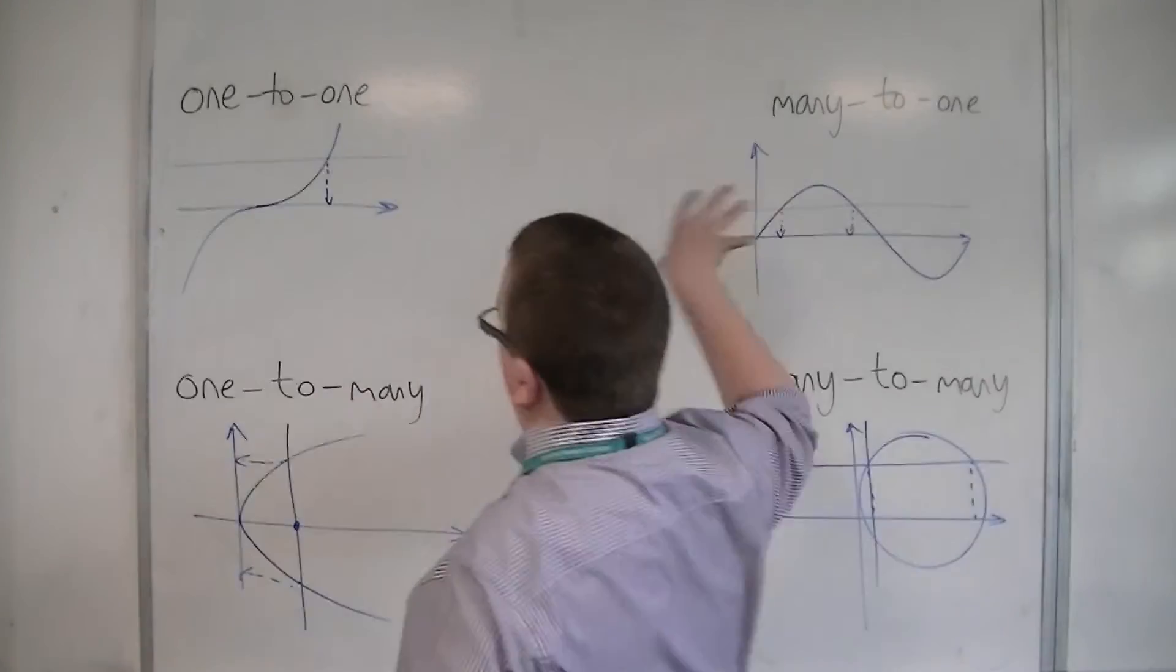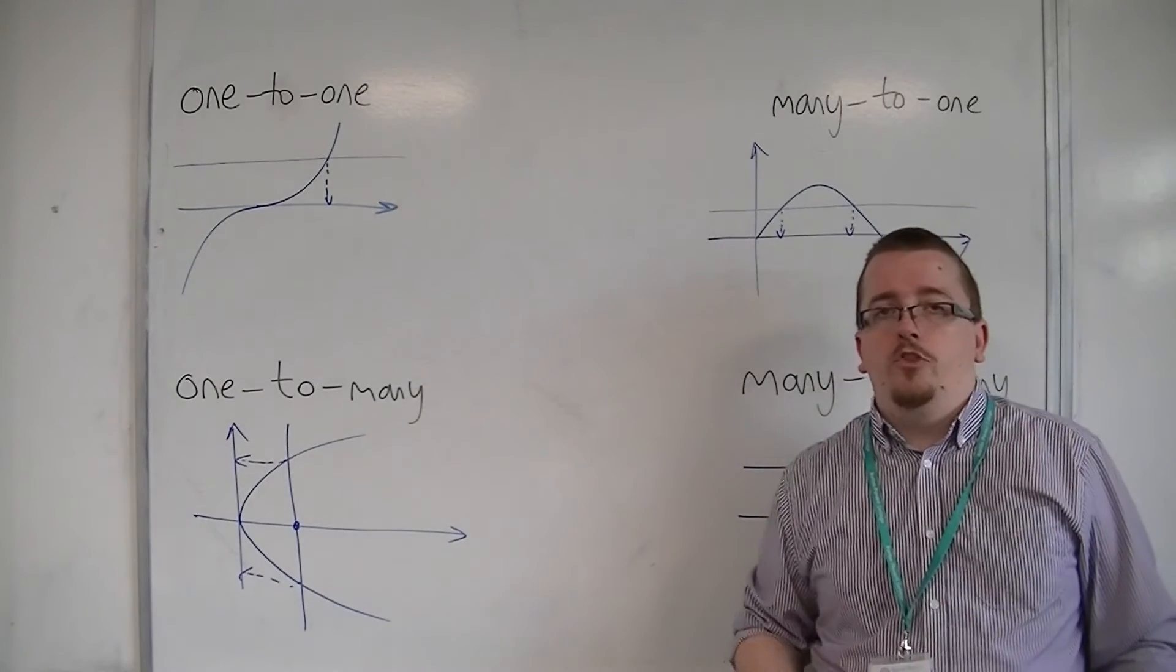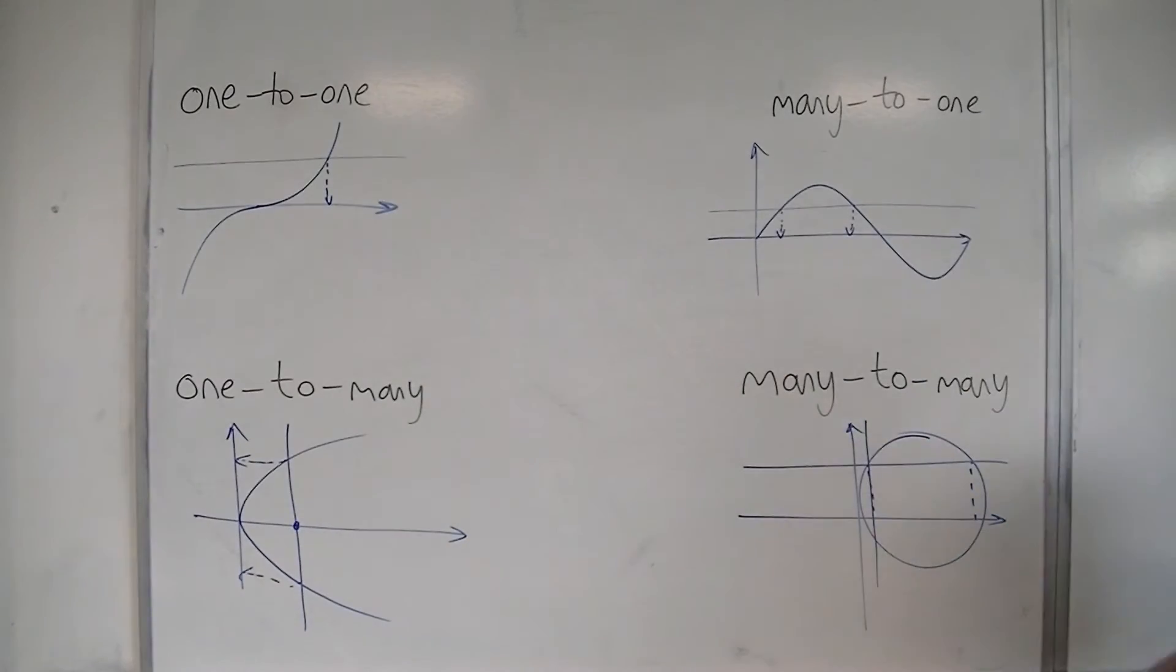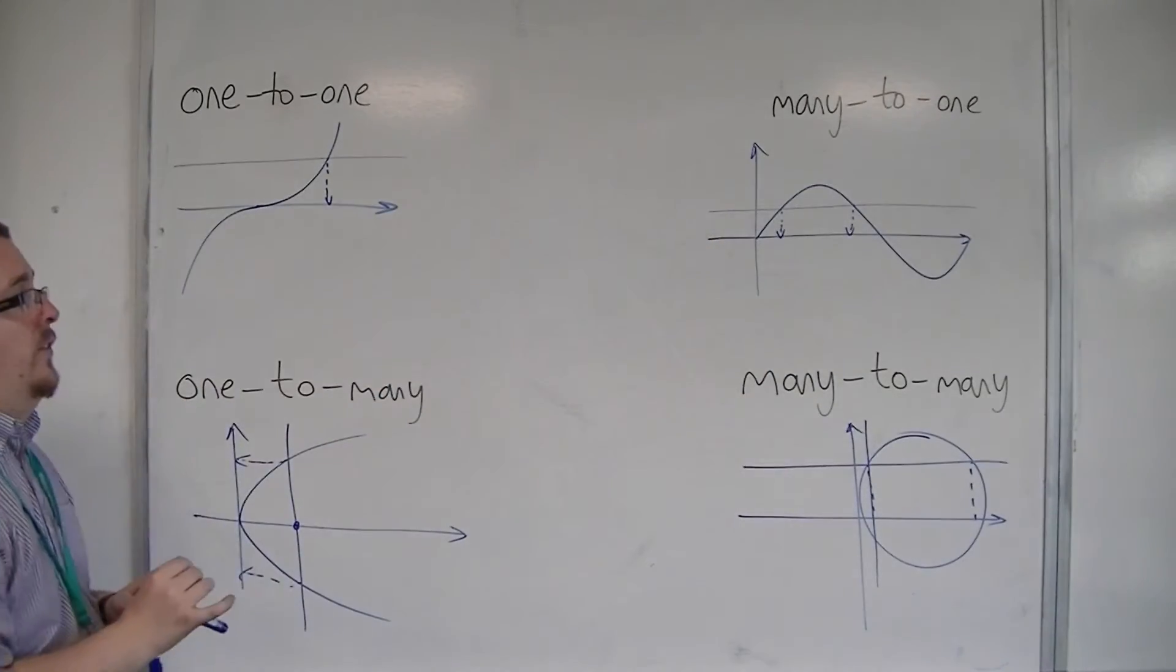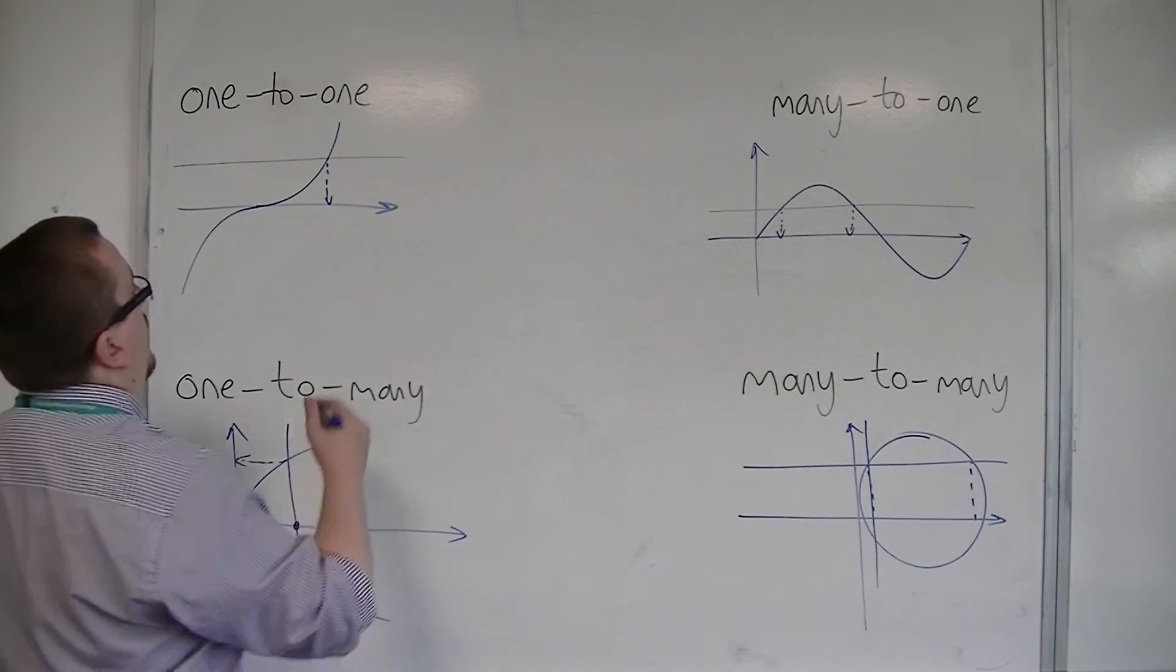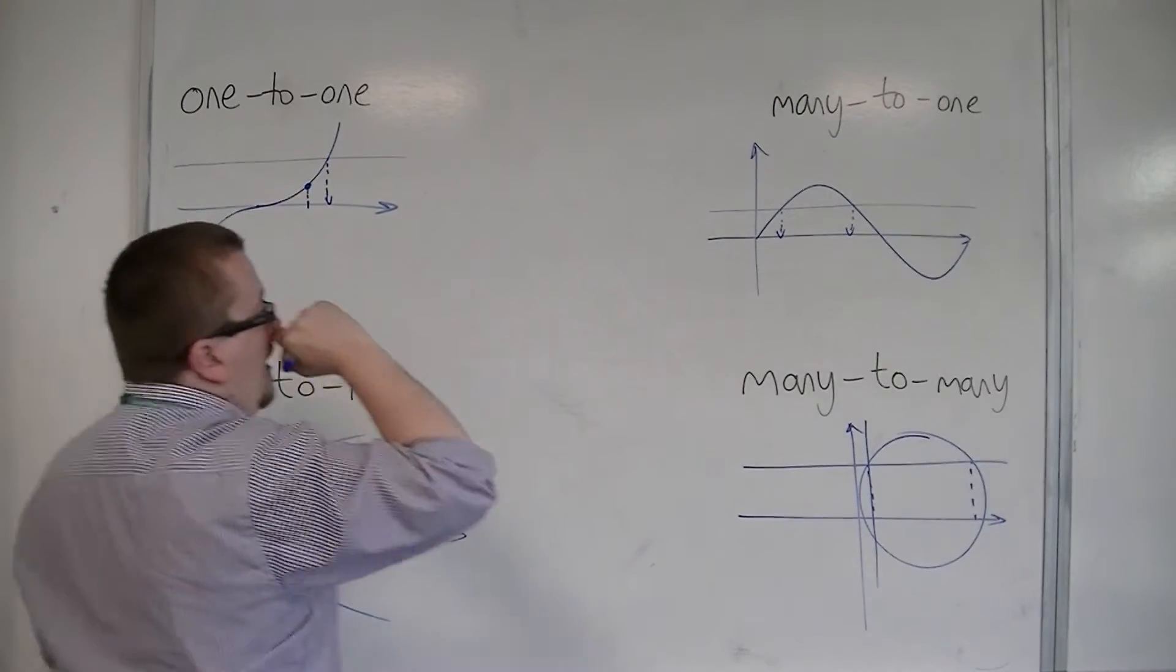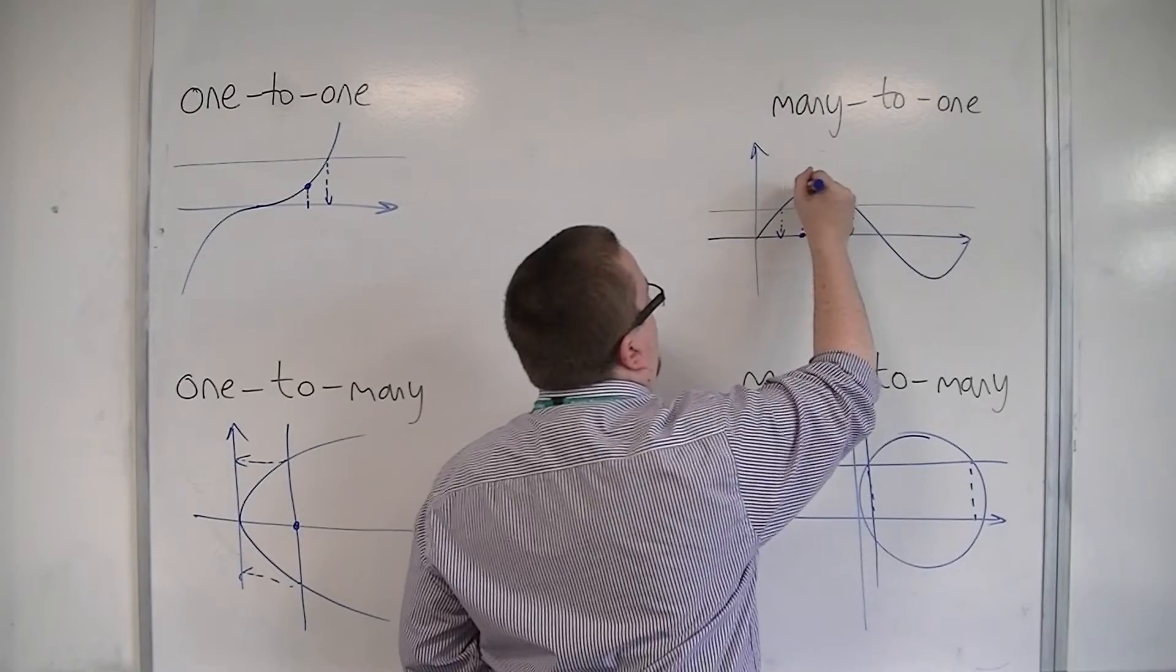So, of these, only two of them are functions. The ones that are functions are the one to one and many to one. Because, if I put in one singular value of x, I get out one singular value of y. I put in a value of x, and I get one value of y.